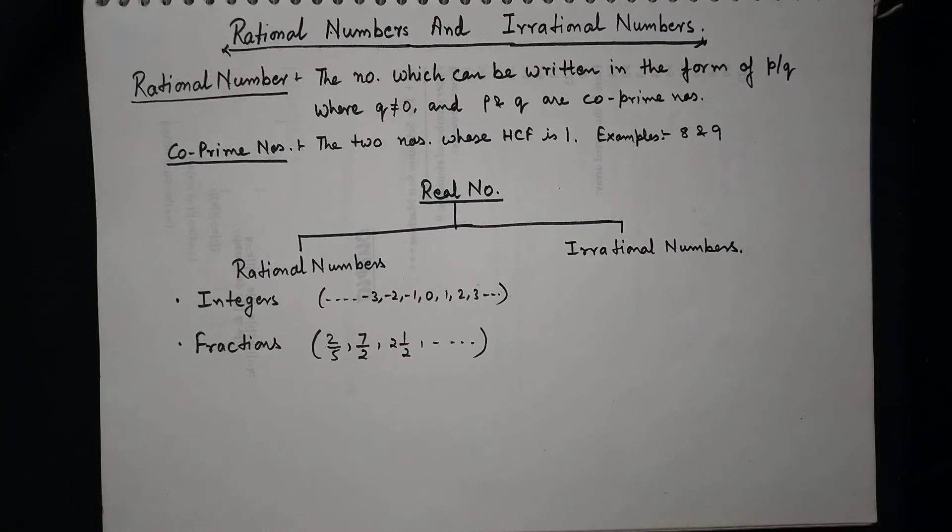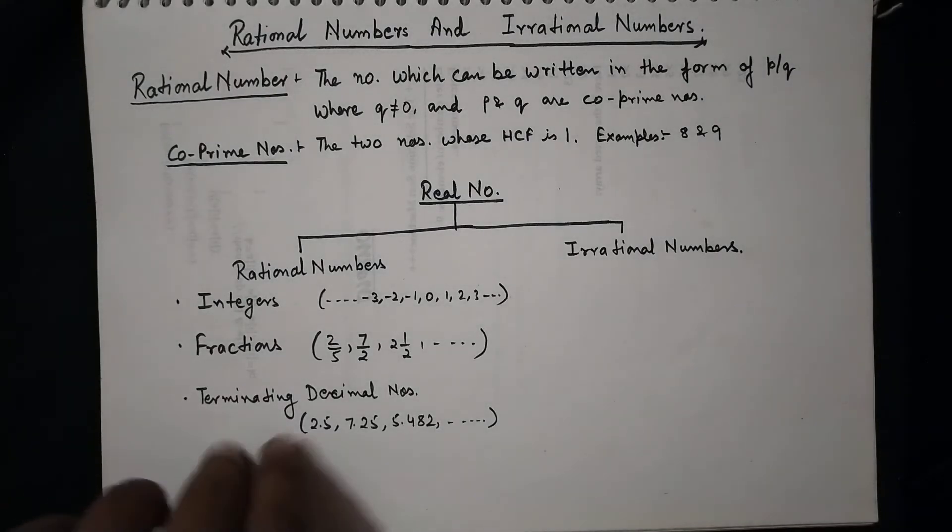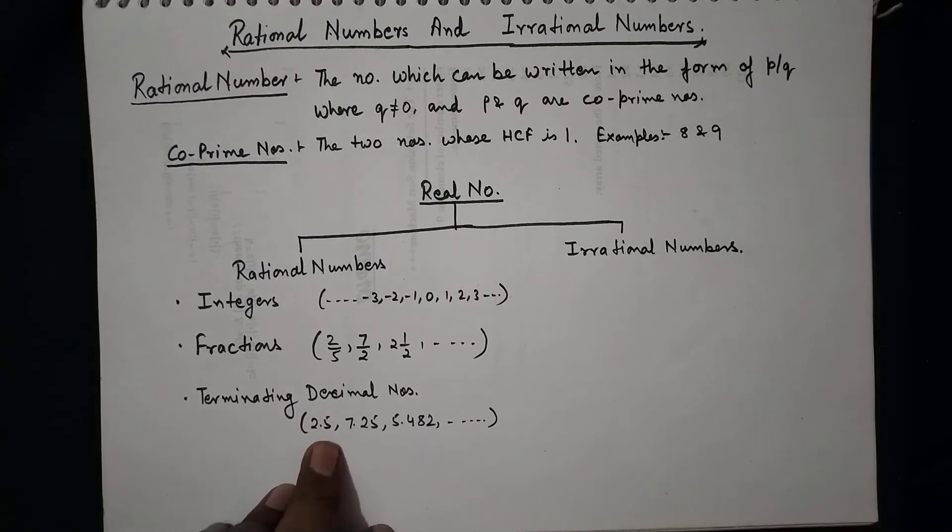And the next one is decimal. So the terminating decimal numbers are those decimal numbers which when divided give a remainder zero. Here we are having a few examples. Suppose we take 2.5, 7.25, 6.482, and so on.